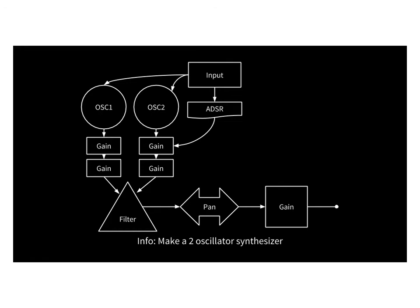Then, a second set of gain nodes allows us to balance the sound between the two oscillators. A filter can change the color of the sound by reducing unpleasant frequency content.